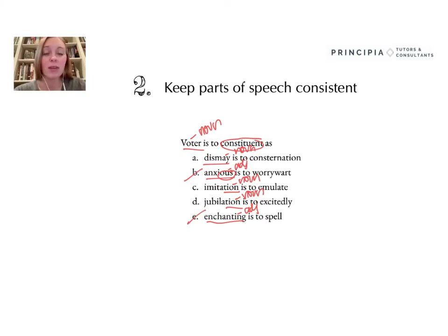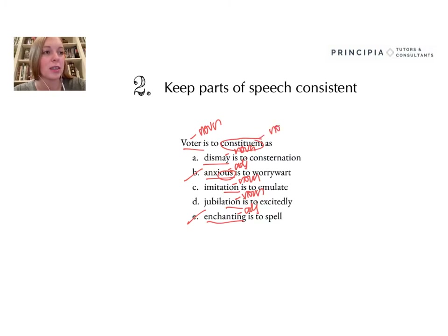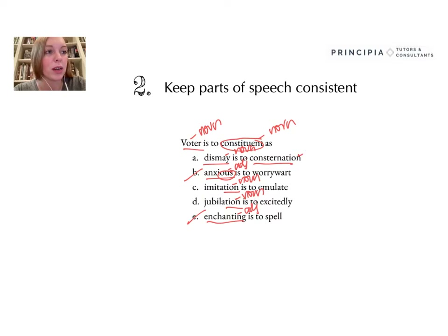Now, if I was taking the SSAT, I could feel safe to guess because I've eliminated two options. I'm going to give you a hint and tell you that constituent — and consternation — is also a noun. Let's see if we can figure out the correct answer just with that knowledge. Looking at answer choice A, the second word is consternation. That same -TION word ending tells me that that is a noun, so that answer can still stay.